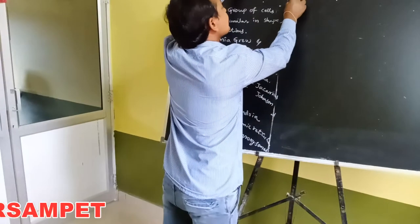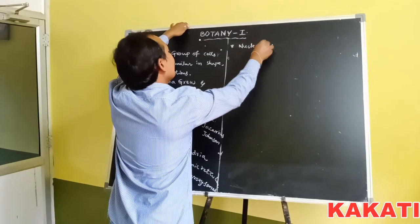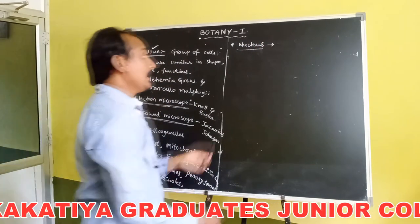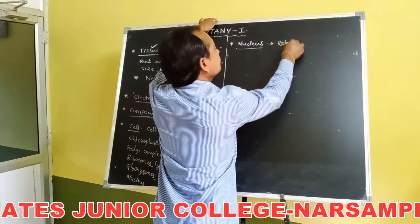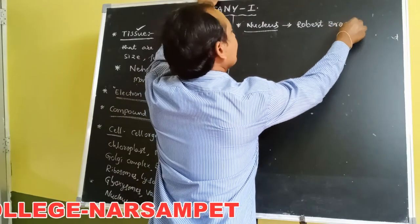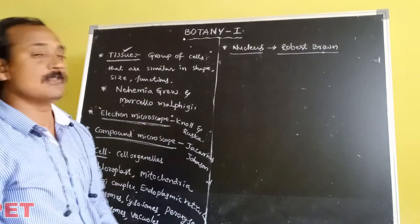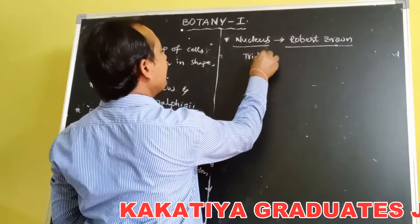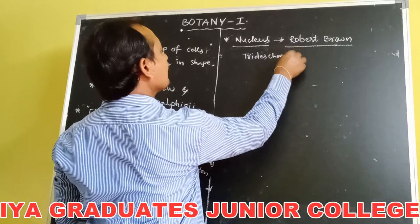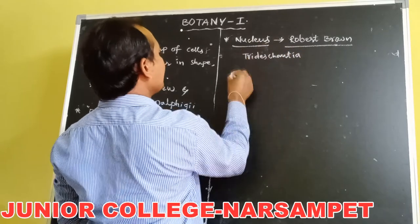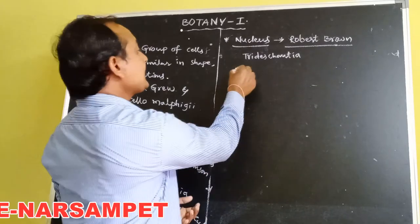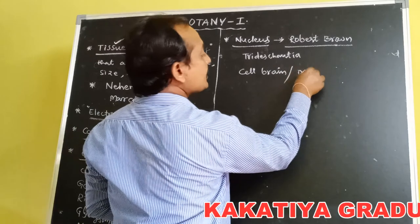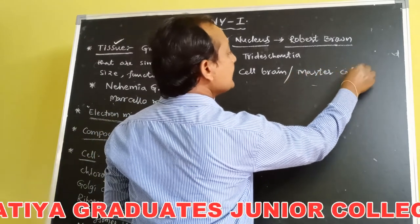The nucleus was discovered by Robert Brown in Tradescantia. The nucleus is also called the cell brain or master controller of the cell.